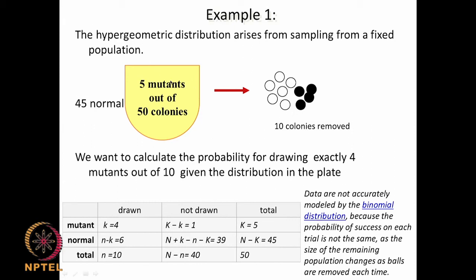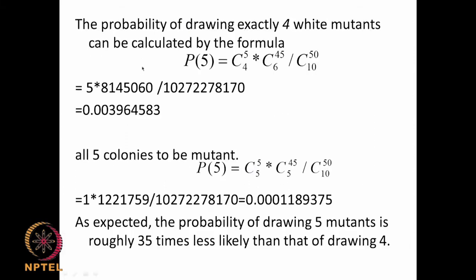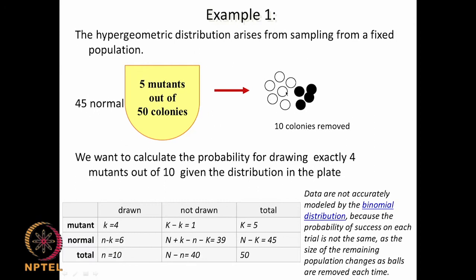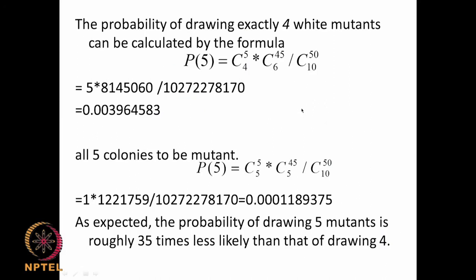We cannot exactly model this with the binomial because the probability of success on each trial is not the same — we are removing items without replacing them. When we toss a coin the probability of heads or tails remains 0.5. But here the probability keeps changing as we remove items. In such a situation you think about the hypergeometric distribution.